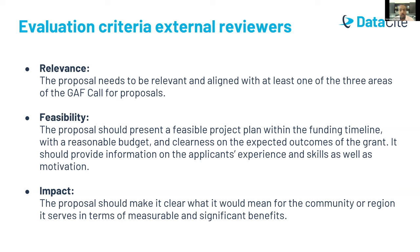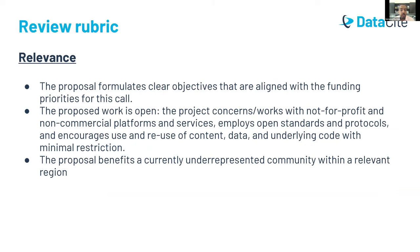For relevance, reviewers assess how the proposal aligns with at least one of the three GAF call-for-proposal focus areas. The proposed work should be open, concerning not-for-profit non-commercial platforms and services, employing open standards, and encouraging use and reuse of content. The proposal should also benefit a currently underrepresented community within a relevant region. For feasibility, reviewers look at whether goals and outcomes are reasonably achievable within the suggested timeline and budget. The more clarity you have in your timelines and budget, the better.